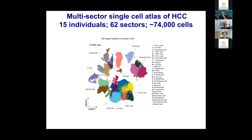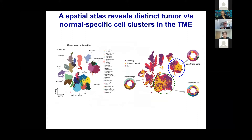This is what the multi-sector UMAP of the single-cell atlas looked like — about 75,000 cells across 62 sectors. We identified the major cell types: lymphoid cells, T-cells, B-cells, myeloids, endothelial cells, fibroblasts, and hepatocytes. A really curious observation was that we could see clusters stratifying based on origin — normal tissue is labeled in yellow, while tumor periphery and tumor core are in purple and red respectively.